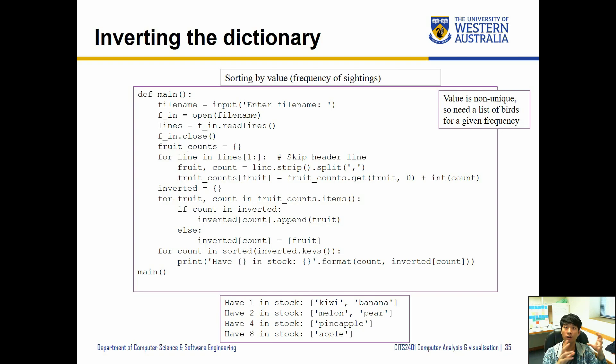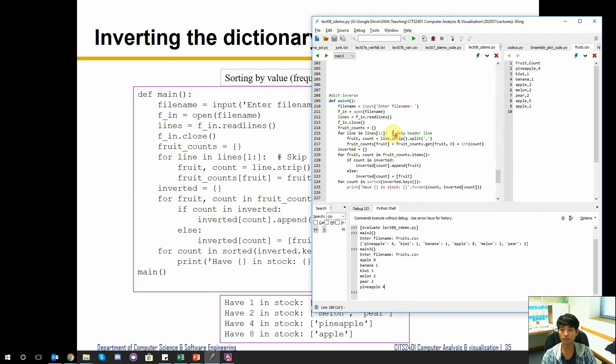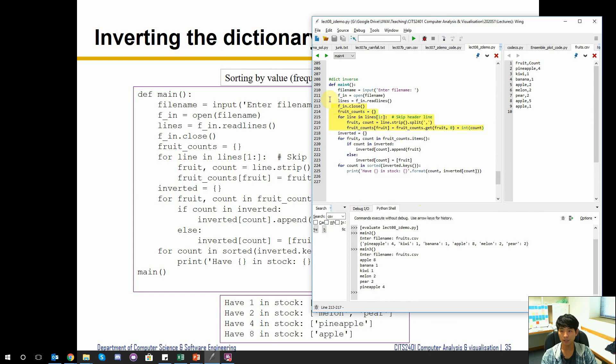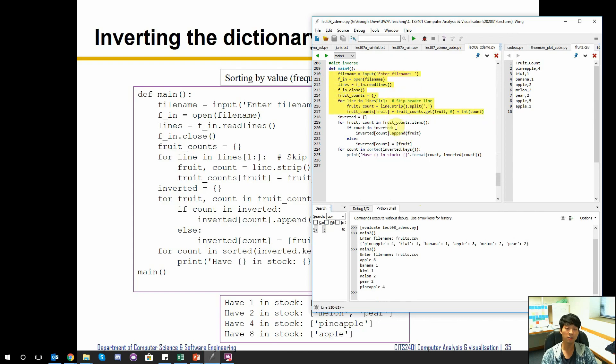And if we already have that count, then what we would do is just append the old key as the new value. And if the old count doesn't exist, then we can create a new entry into our inverted dictionary. So let's have a look at its example, which is main four. So you can see that these first few lines is exactly the same as before other than the printing out. And this invert is essentially what's converting from the key value pairs to value key pair as the new dictionary of key value pairs.